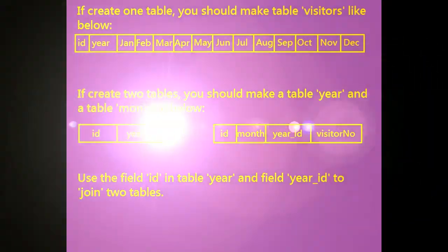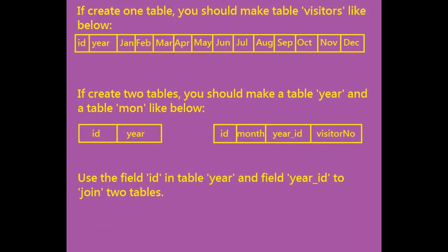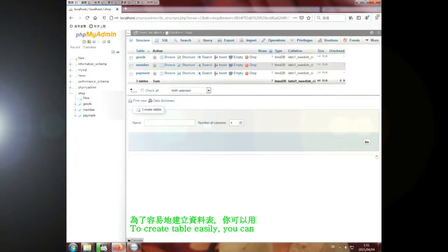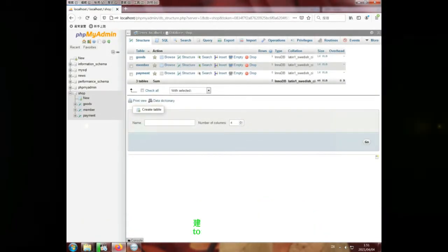You should create one or two tables. If you create one table, you need to have year and 12 months as the fields together. If you create two tables, one table should have the year and the other table should have the month and number of visitors. To create a table easily, you can use phpMyAdmin. We will use one table this time because it is easier.